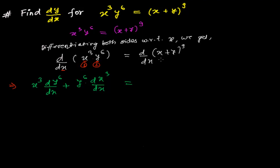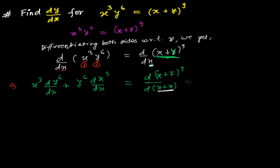Now on the right side, the base is not just x — it is x plus y. So we need to differentiate the whole function x plus y to the power 9 with respect to x plus y. Since x plus y is not equal to x alone, x plus y is another function. So we need to differentiate x plus y with respect to x as well using the chain rule.